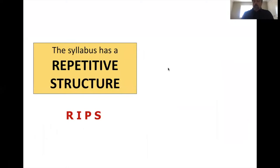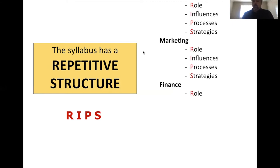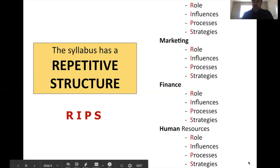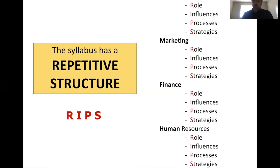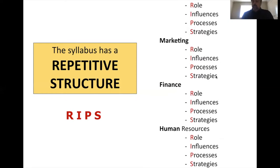The HSC course has a repetitive structure captured by the acronym RIPs — Role, Influences, Processes, and Strategies — which appear in every single topic. Under Operations you see the role, the influences, the processes, and the strategies. The only exception is HR, which has an additional effectiveness component. Each topic has these four areas and HR has the extra one.